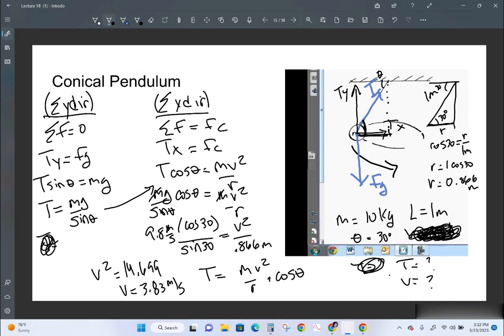I'm just going to use this one. So it's 10 kilograms times 9.8 meters per second squared, divided by sine of 30, which is 0.5. So it's going to be 10 times 9.8, which is 98, divided by 0.5. So it's going to be 2 times, it's going to be 196 newtons. So it has a speed of 3.83 and a tension of 196.